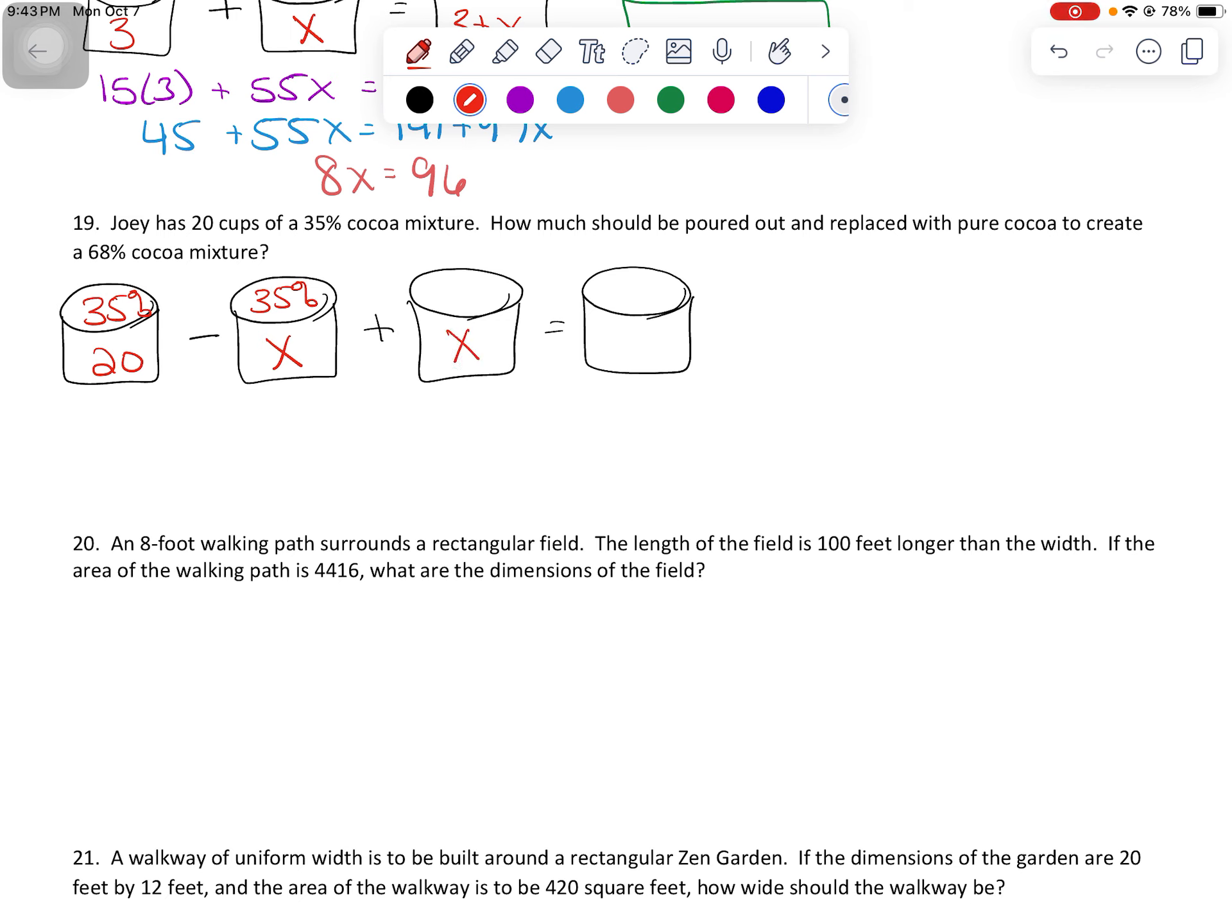Pure cocoa is 100% cocoa to create a 68% cocoa mixture. And quantity-wise, I've got 20 minus x plus x. This replacement here means that you're going to end up with the exact same quantity that you started with. So now, if I go ahead and start writing out my equation here, I'm going to have 35 times 20 minus 35x plus 100x equals 68 times 20. So 35 times 20, I feel like that's 700.